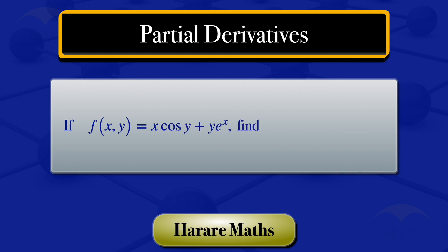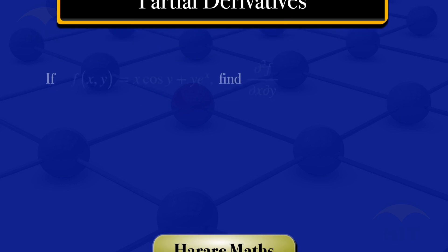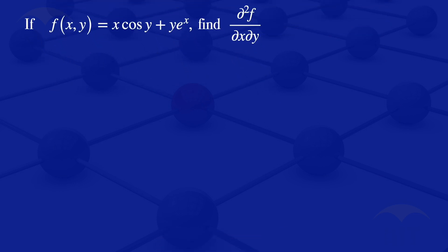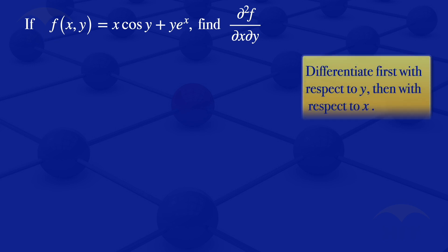If f of xy equals x cosine y plus y exponent of x, in this video I'm going to find the second partial derivative. We are given that function f of xy. To find this second partial derivative, we differentiate first with respect to y, then go on and differentiate with respect to x. So I'll start by differentiating f with respect to y, so that we get the partial derivative of f with respect to y.